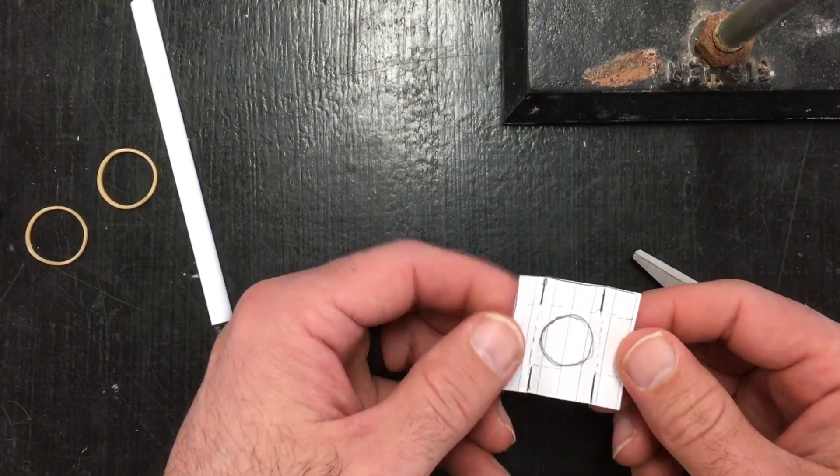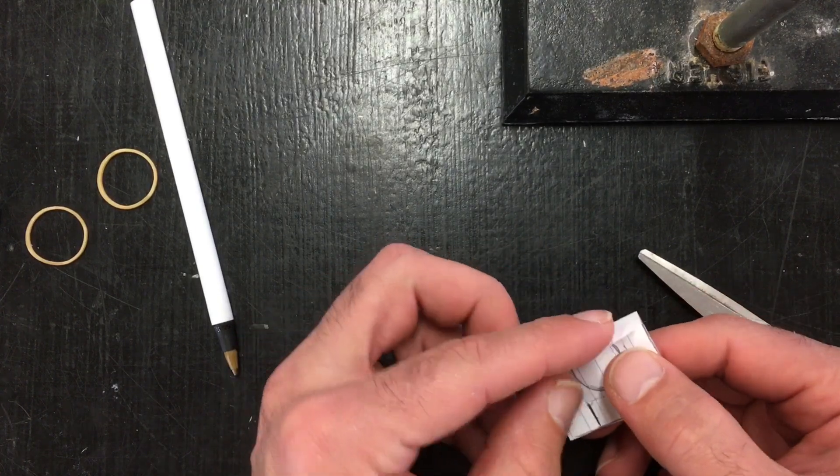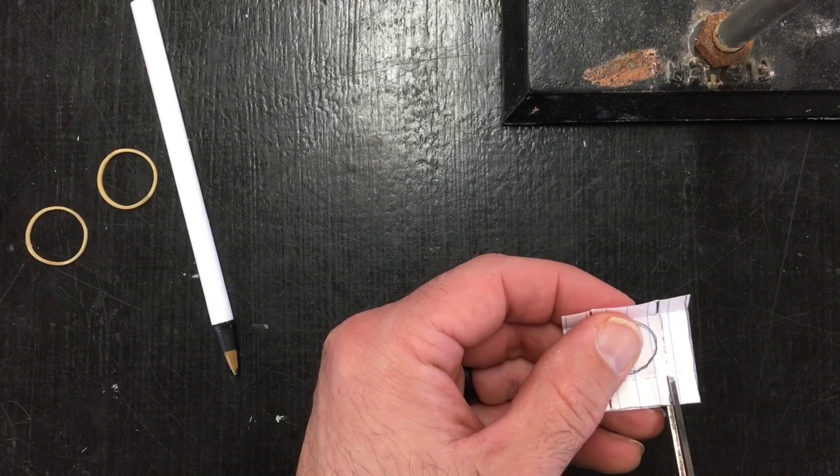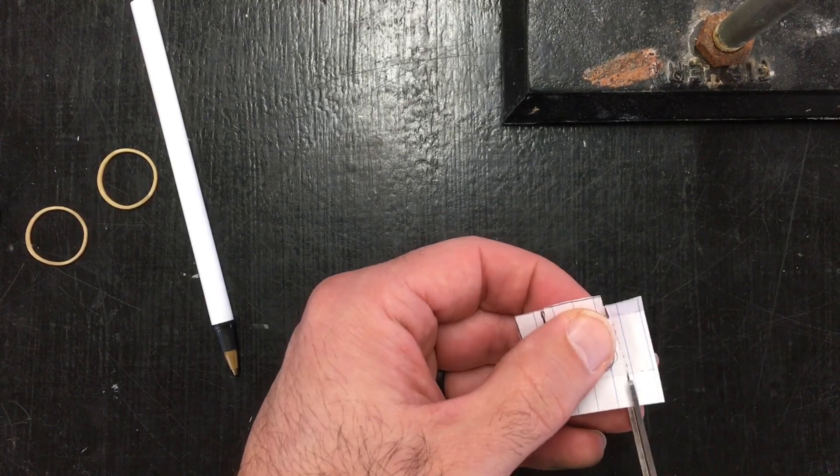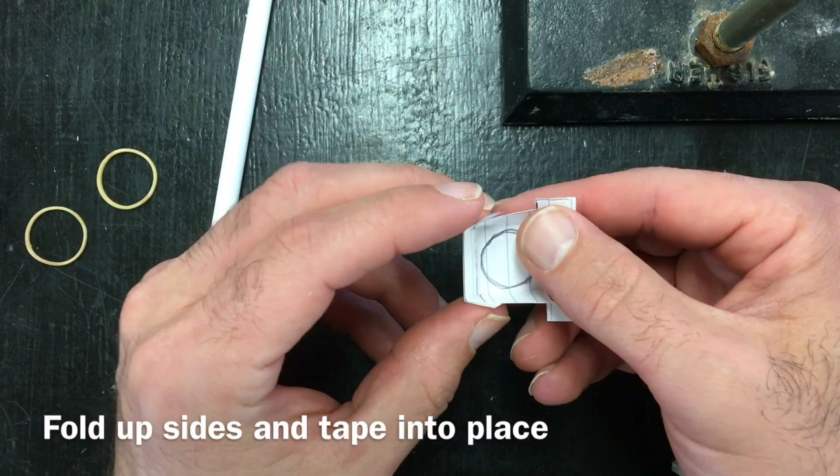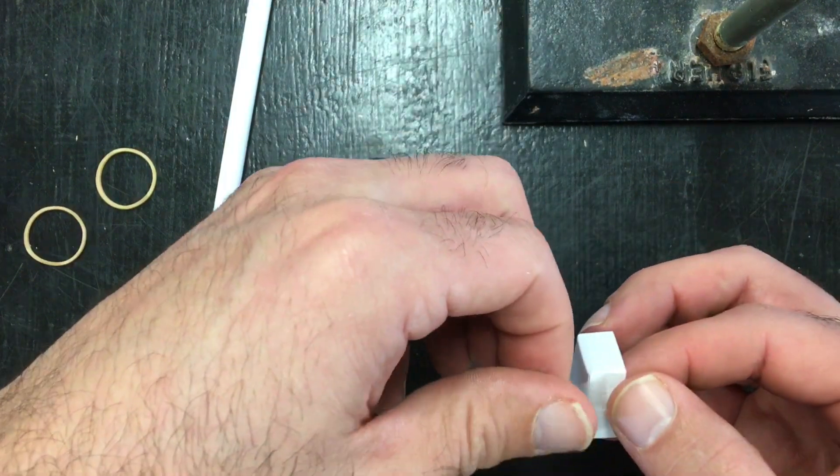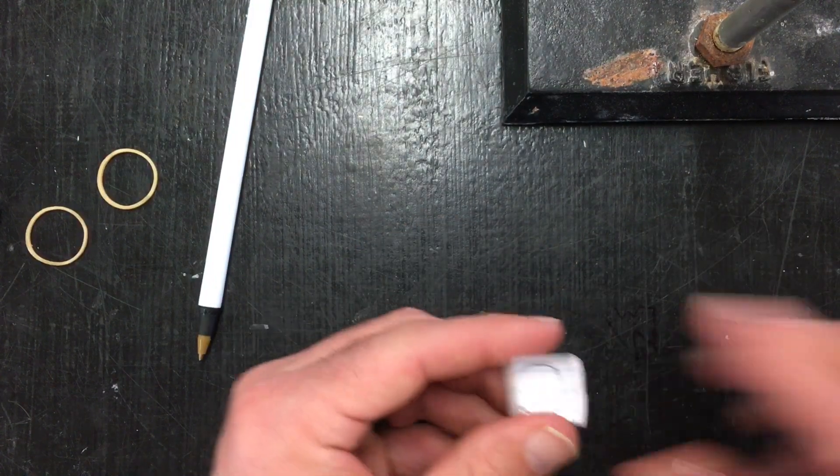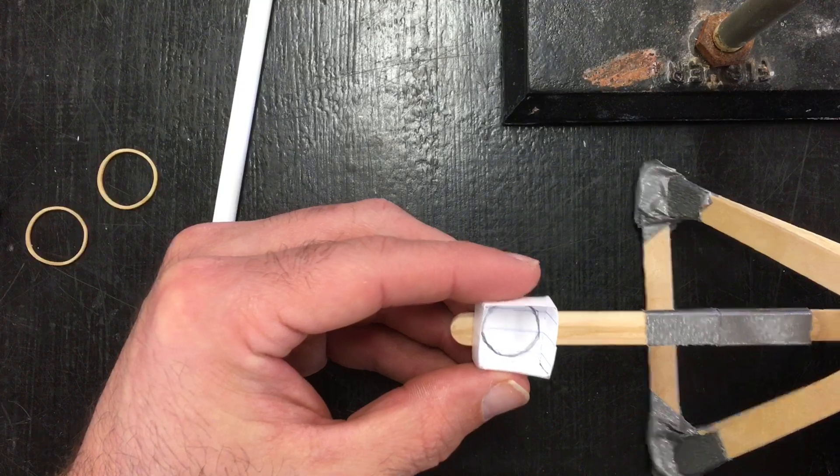So I've cut out my square, I fold it along all the dotted lines and then flatten it back out again. So now I'll take my scissors and I'll cut just up to the crease. Now when I tape this onto my throwing arm, I want to leave a little bit of the popsicle stick at the top.